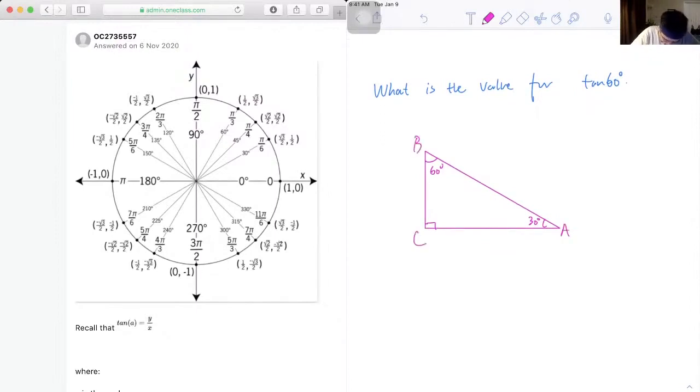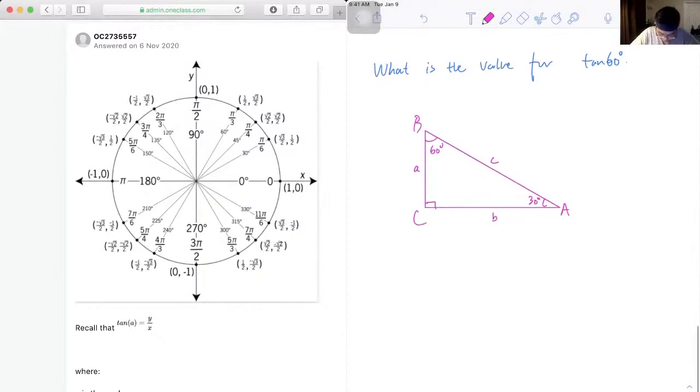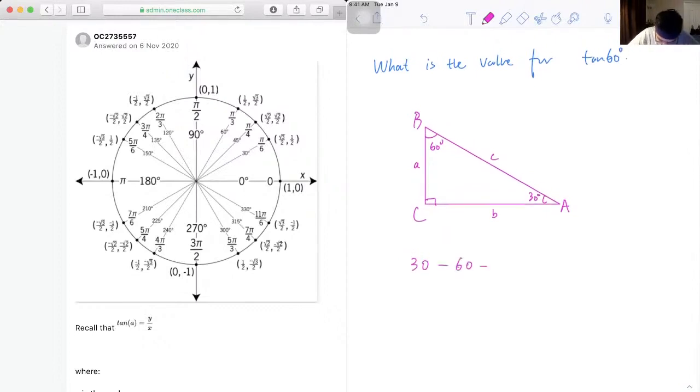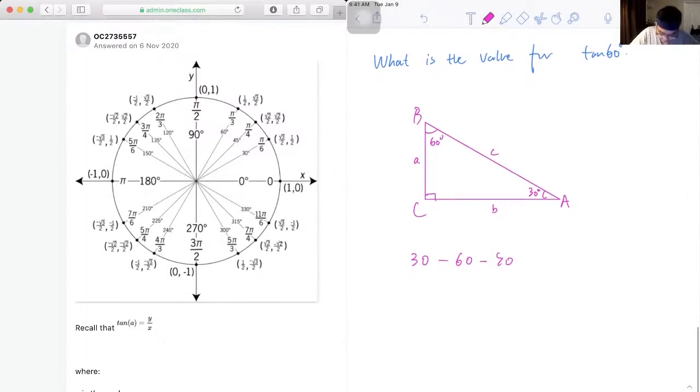And the sides are going to be little a, little b, and little c. Okay, so remember if we come across a question that has a right triangle with 30, 60, 90, it always follows a fixed ratio of sides.